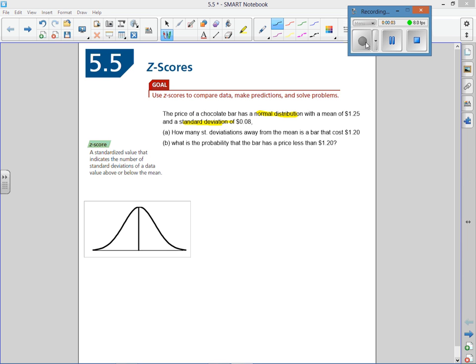We're going to begin section 5.5 Z-scores by taking a quick review of the last section, 5.4 with normal distributions and area under the curve. The price of a chocolate bar has a normal distribution with a mean of $1.25 and a standard deviation of 8 cents.